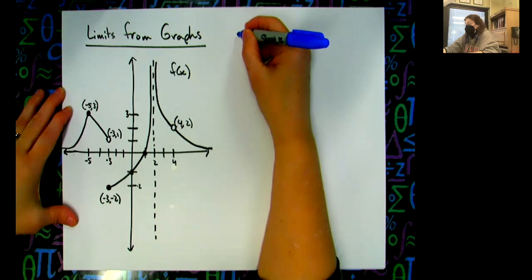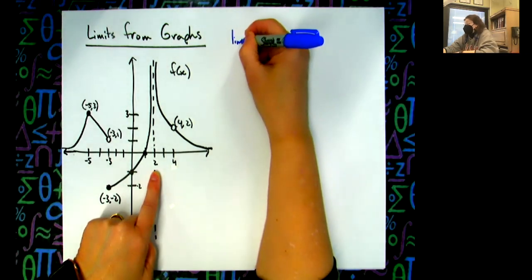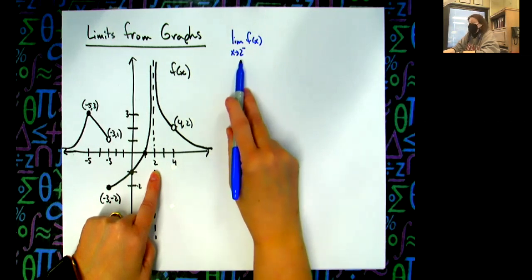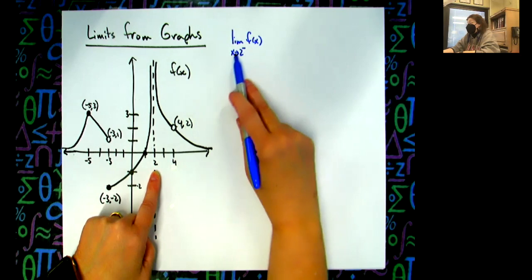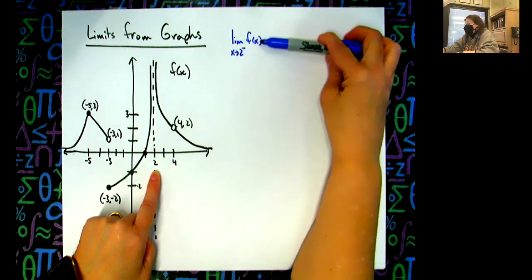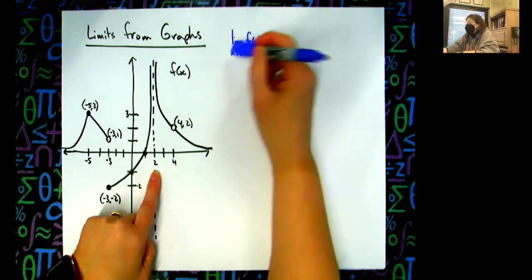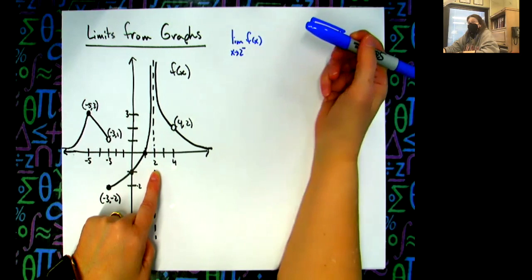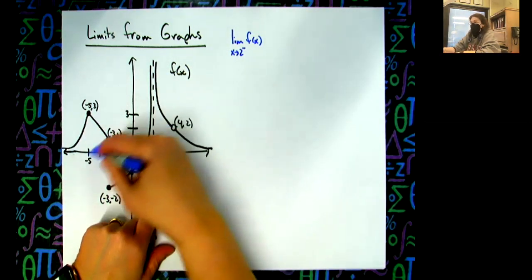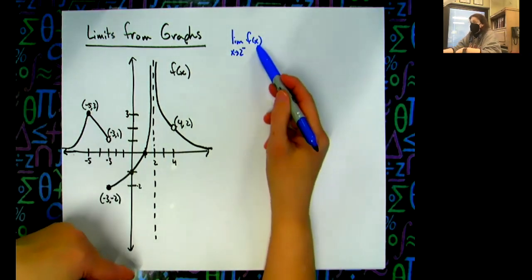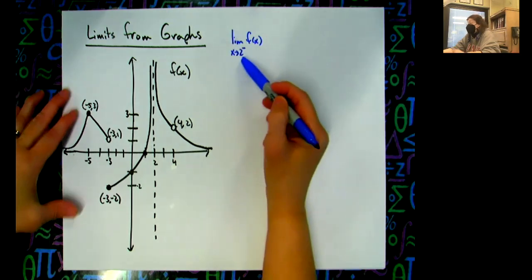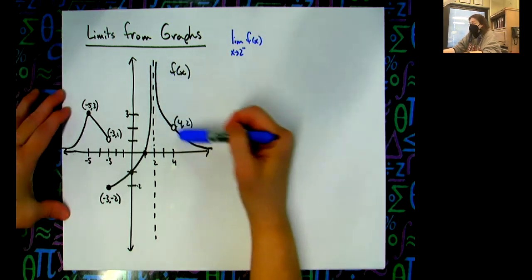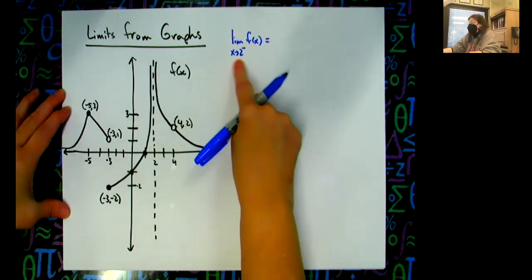Let's do this around x = 2. The limit as x approaches two from the left of f of x — the 'x approaches two from the left' is tiny underneath the word limit, and f of x is on the same level. You take the limit of something, so if you write limit notation you have to have something that follows it. If I was doing the limit of a parabola, I would write the limit as x approaches two from the left of x squared plus two x plus three. When I don't know what the function is, I just write f of x.